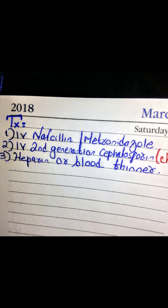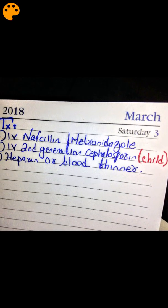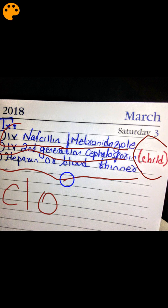Now let's discuss treatment options. Since this is an emergency condition, we must give IV antibiotics such as IV nafcillin and IV metronidazole. In cases of cavernous sinus thrombosis in children, give IV second-generation cephalosporins. The doctor may also prescribe heparin or a blood thinner, because thrombosis involves clot formation and heparin directly degrades the clots. That's all about cavernous sinus thrombosis. Thank you so much.